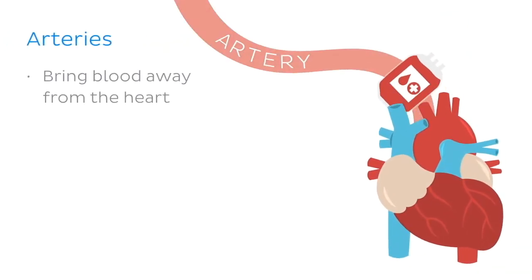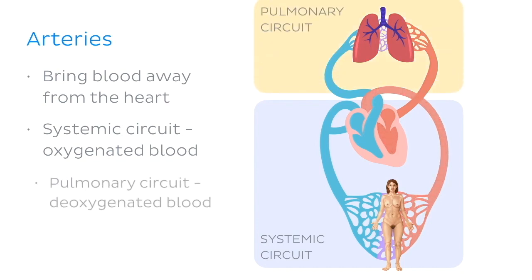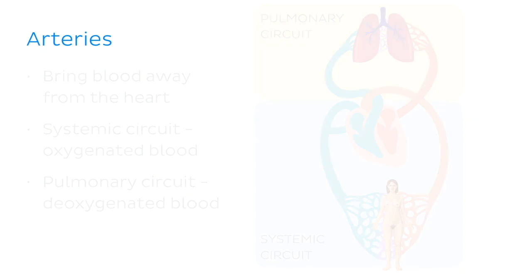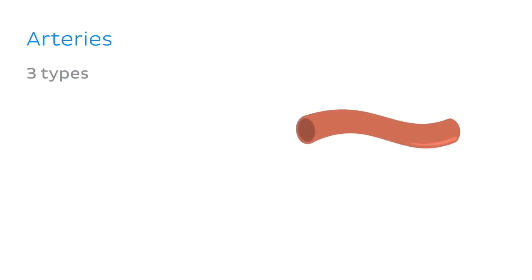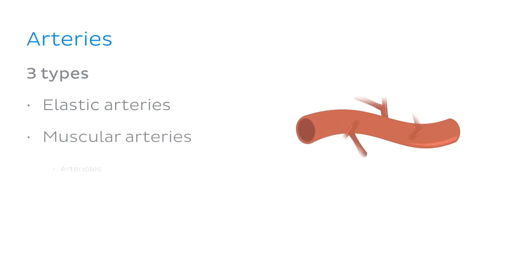Arteries are defined as vessels bringing blood away from the heart. In the systemic circuit, arteries carry oxygenated, nutrient-rich blood towards various organs and tissues of the body. The exception to this is the pulmonary circulation, where arteries carry deoxygenated blood from the heart to the lungs. There are three types of arteries in the body: elastic arteries, muscular arteries, and arterioles.